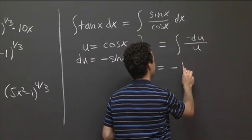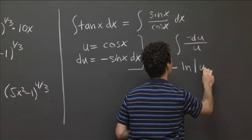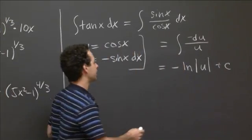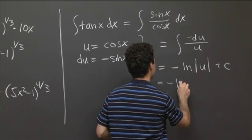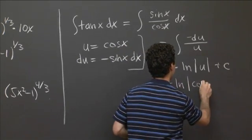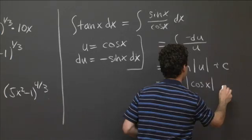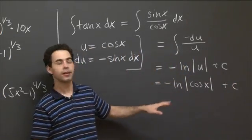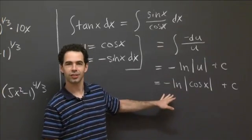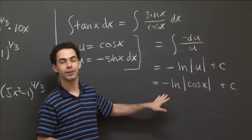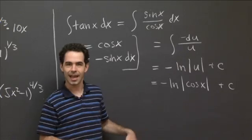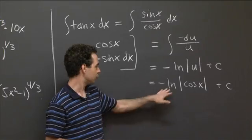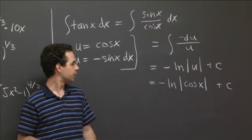So this is minus ln of the absolute value of u plus a constant. And now we had this that u was cosine of x. So this is minus ln of the absolute value of cosine of x plus a constant. Now this should look a little bit familiar, because in one of Christine's recitations earlier, she had you compute the derivative of ln of cosine x. And in that case, you saw that that derivative was equal to minus tangent of x. Just like it should be.